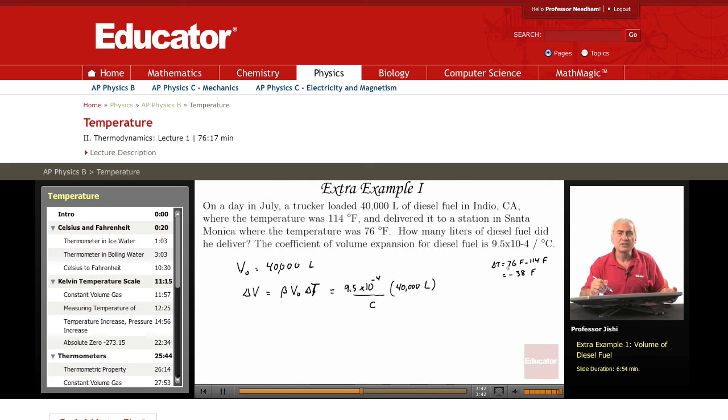But I need the change in Celsius degrees. Now we know that every 1.8 Fahrenheit, a change of 1.8 Fahrenheit, corresponds to a change of 1 Celsius. So to get the change in Celsius, delta T is minus 38. I should divide by 1.8, and that gives me about minus 21 Celsius.